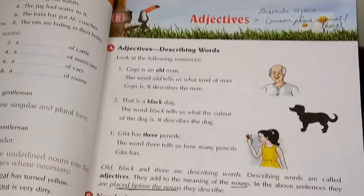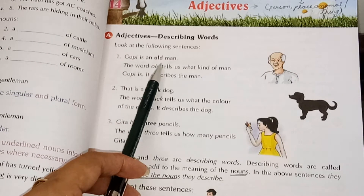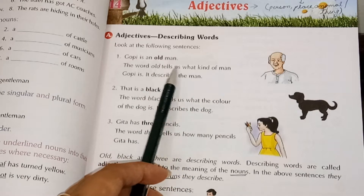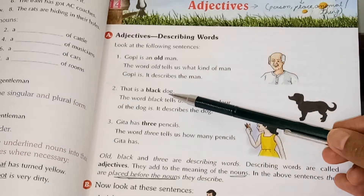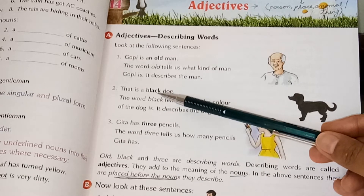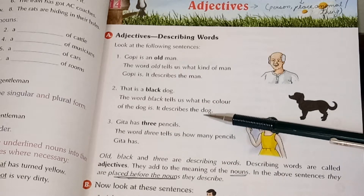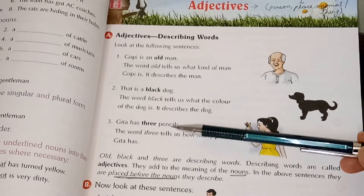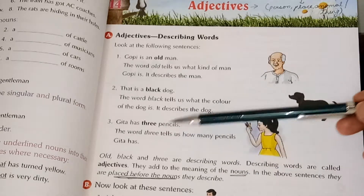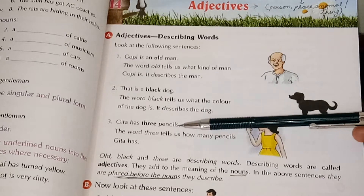Now children, look at the following sentences here. Gobi is an old man. The word 'old' is telling you what kind of man Gobi is, so it is describing the man whose name is Gobi. In the second sentence: this is a black dog. Dog is the noun and 'black' is describing this dog — it tells us the color of the dog. Then we have: Gita has three pencils. There is a description about pencils — how many pencils are there. The word 'three' tells us how many pencils Gita has, so 'three' is describing pencils, and pencils is a thing, also a noun.